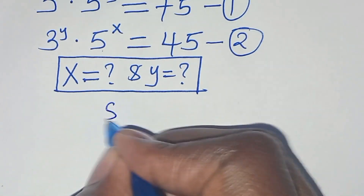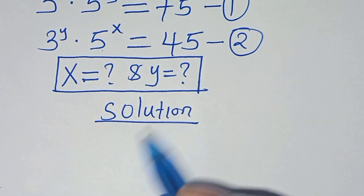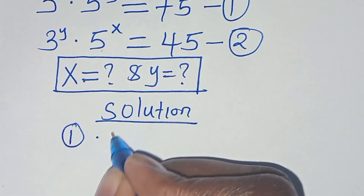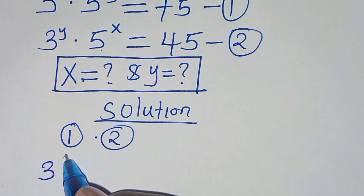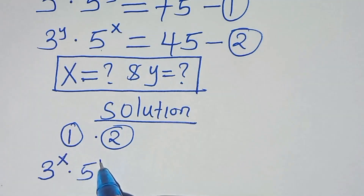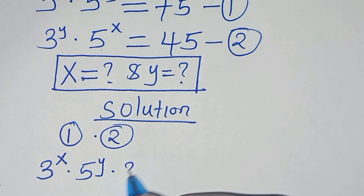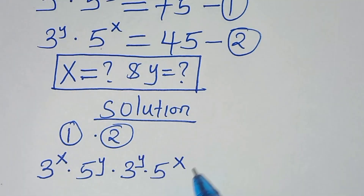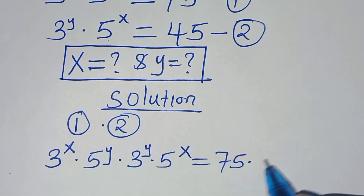So let's present a solution from here. The first step is to multiply equation 1 times equation 2. So equation 1, we have 3 to the power of x times 5 to the power of y, multiplied by equation 2, which is 3 to the power of y times 5 to the power of x, this is equal to 75 multiplied by 45.